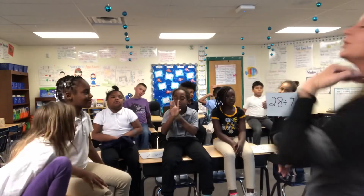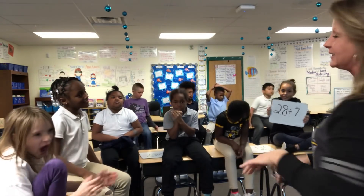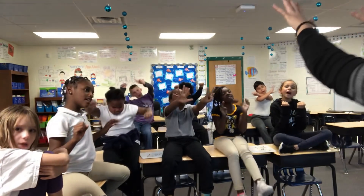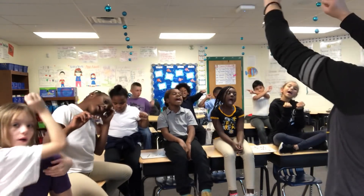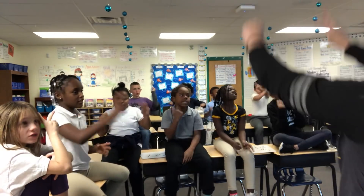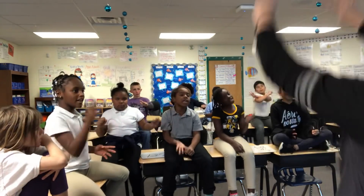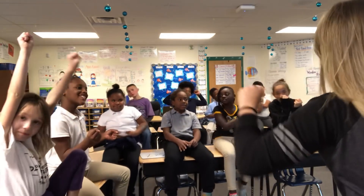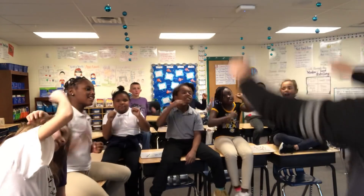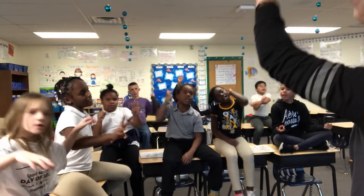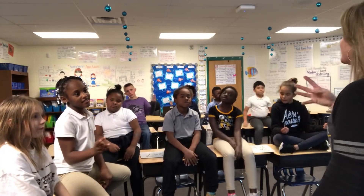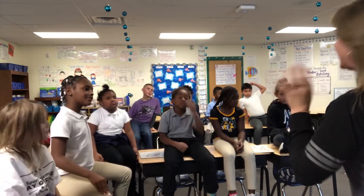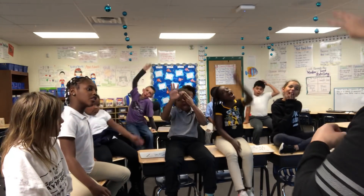Our next division problem is twenty-eight divided by seven. So you will count by seven until you get to twenty-eight. Here we go. Seven, fourteen, twenty-one, twenty-eight. Let's try that one more time. Get your fist — we stop at what? Twenty-eight. Here we go. Seven, fourteen, twenty-one, twenty-eight. Awesome. How many fingers do you have up? So twenty-eight divided by seven is four. Four.